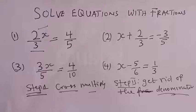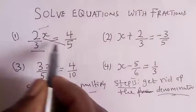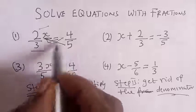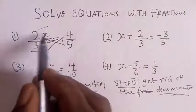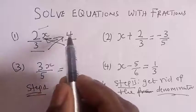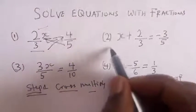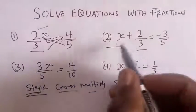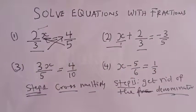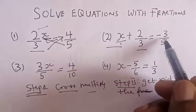If you look at question number one, we can apply the cross multiplication method. We multiply this by this and this by this — that is 2x times 5 is equal to 4 times 3, which is equal to 12. Now if you look at the second question, we have x plus 2 over 3 equal to minus 3 over 5, and in this type of question we are going to find the LCM or lowest common denominator.